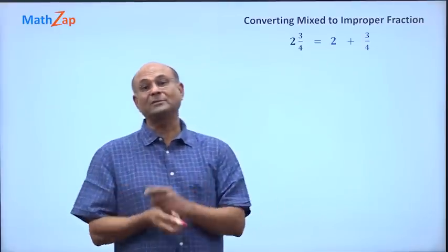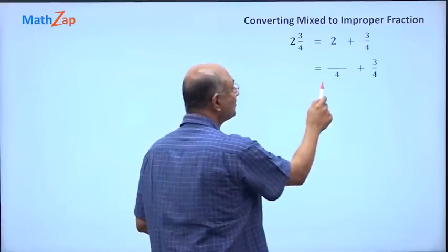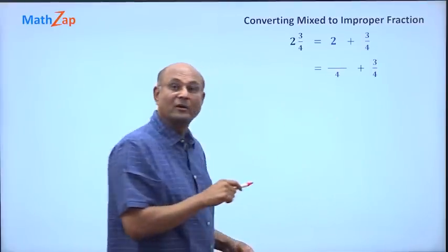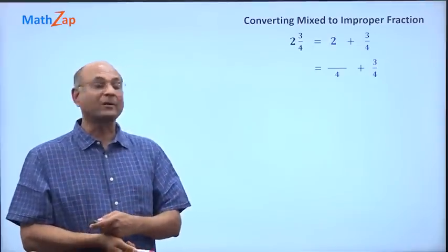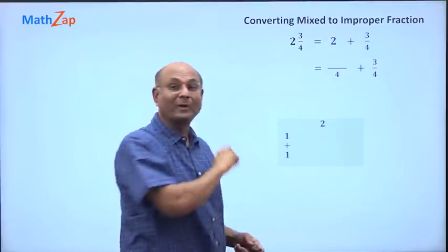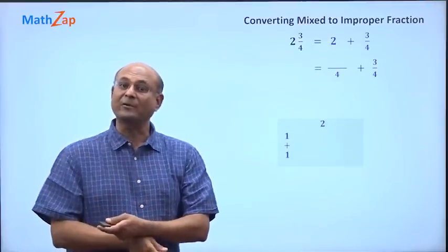Now 3 by 4 has the denominator 4, so 2 must also be written with denominator 4. How do I write 2 with denominator 4? Well, 2 is 1 plus 1.